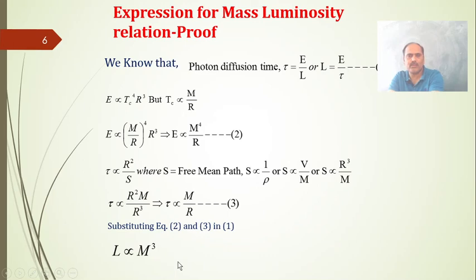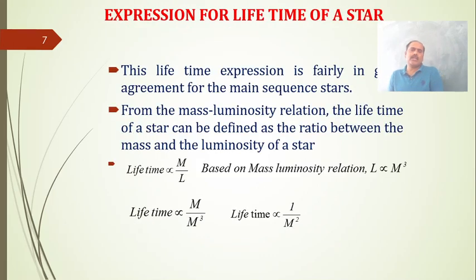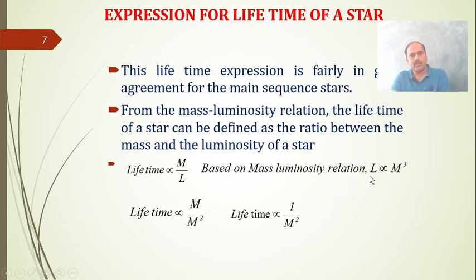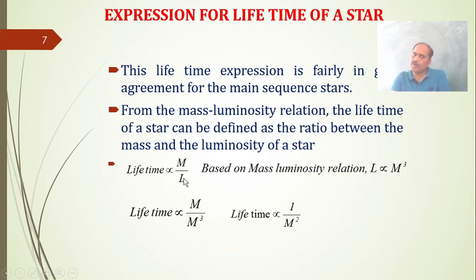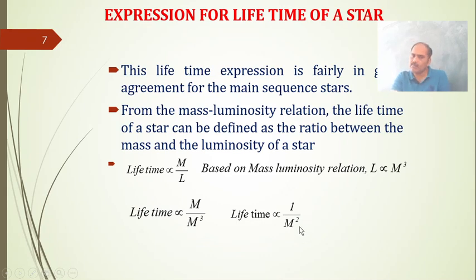The mass-luminosity relation enables us to study the lifetime of a star. Since luminosity is proportional to M³, and lifetime is directly proportional to mass and inversely proportional to luminosity, substituting gives lifetime ∝ 1/M². This means the most massive stars have the shortest lifetimes, while less massive stars have longer lifetimes. Thank you for your kind attention.